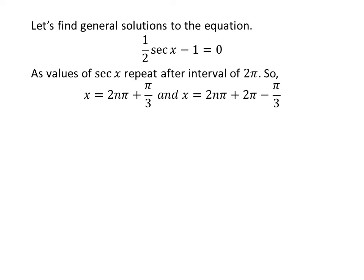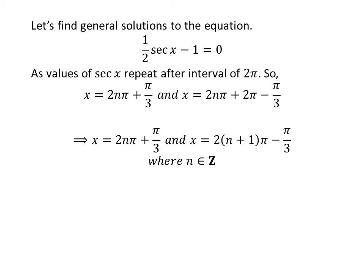Let us find the general solutions for the equation half of secant of x minus 1 is equal to 0. Since the values of secant of x repeat after the interval of 2π, the general solutions are 2nπ plus π/3 and 2nπ plus 2π minus π/3, where n is an integer. Further simplification gives the general solutions as 2nπ plus π/3 and (2n+1)π minus π/3.